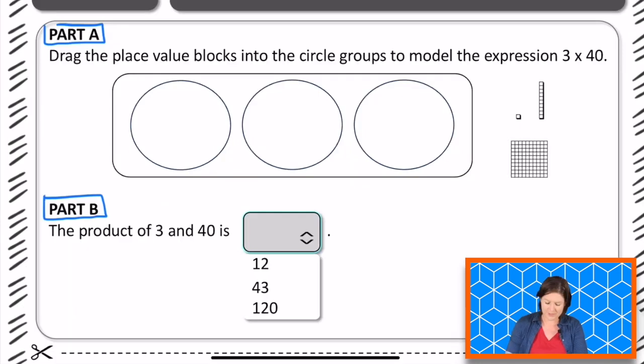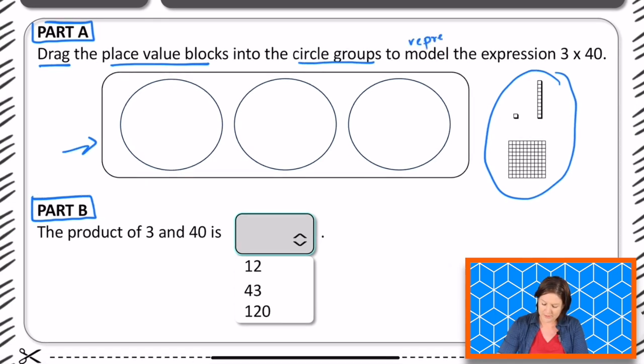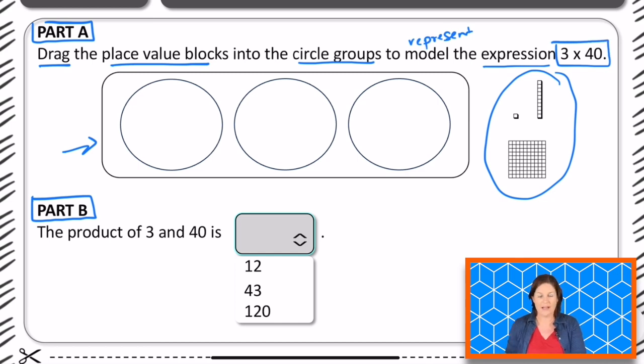Let's take a look. It says to drag the place value blocks, which are over here, into these circle groups, which are down there, to model or to represent or show the expression of 3 times 40. Okay, so I'm seeing that word drag.